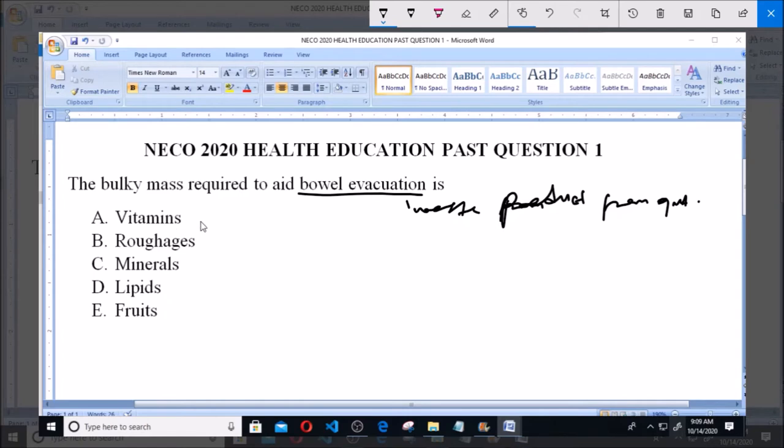Option A says vitamins. Vitamins is a class of food that is important for the chemical activities or metabolic activities that go on in the body. Examples include vitamin A, vitamin B, C, D, E. All these vitamins have specific functions in the body, helping in different areas.